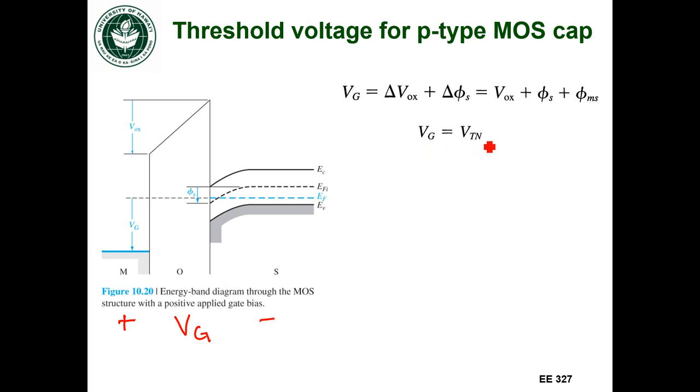Threshold voltage. The reason why there's an N here is because this is a threshold voltage when we're inducing an inversion layer of electrons at the interface. Remember the bands are bending down. I'm building up a layer of electrons here at the interface once I'm going into inversion. So that's why there's an N here, N for electrons.